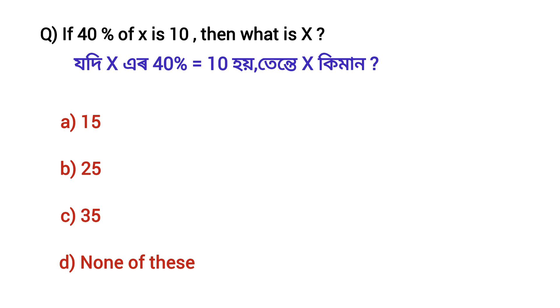The options are: Number A — 15, Number B — 25, Number C — 35, Number D — none of these.